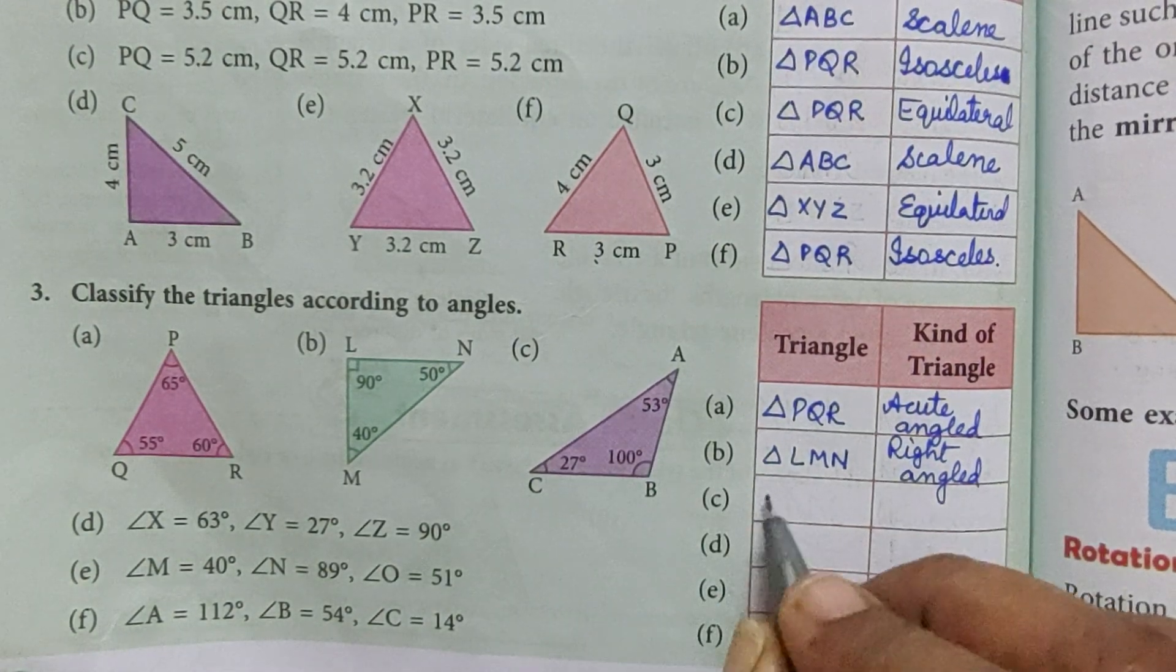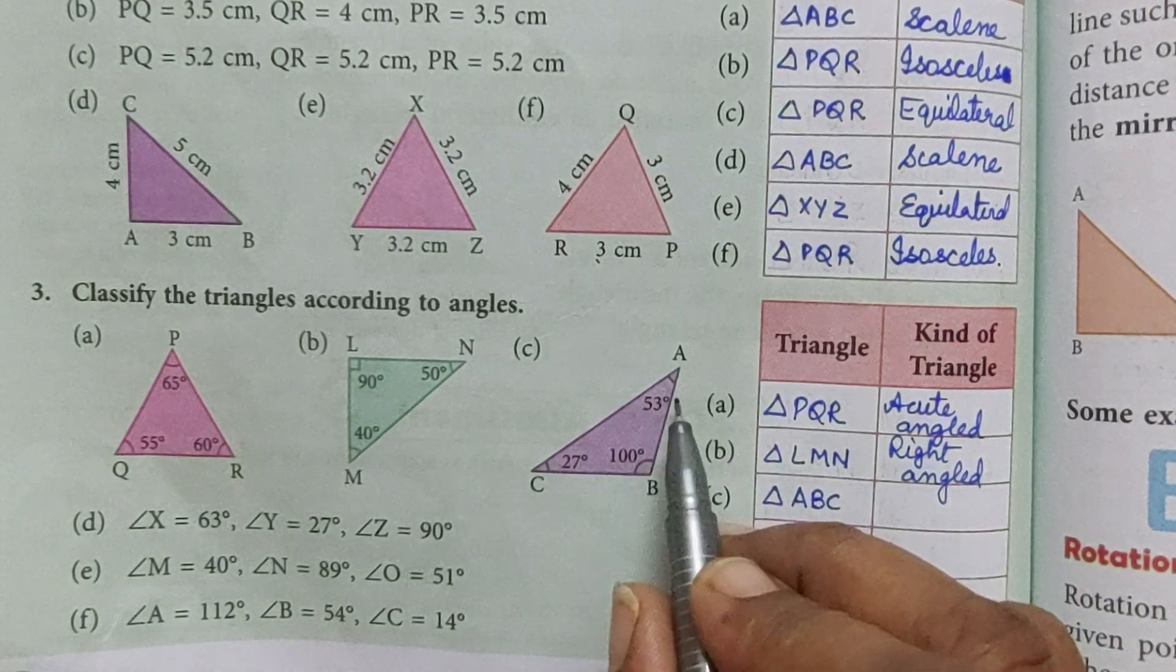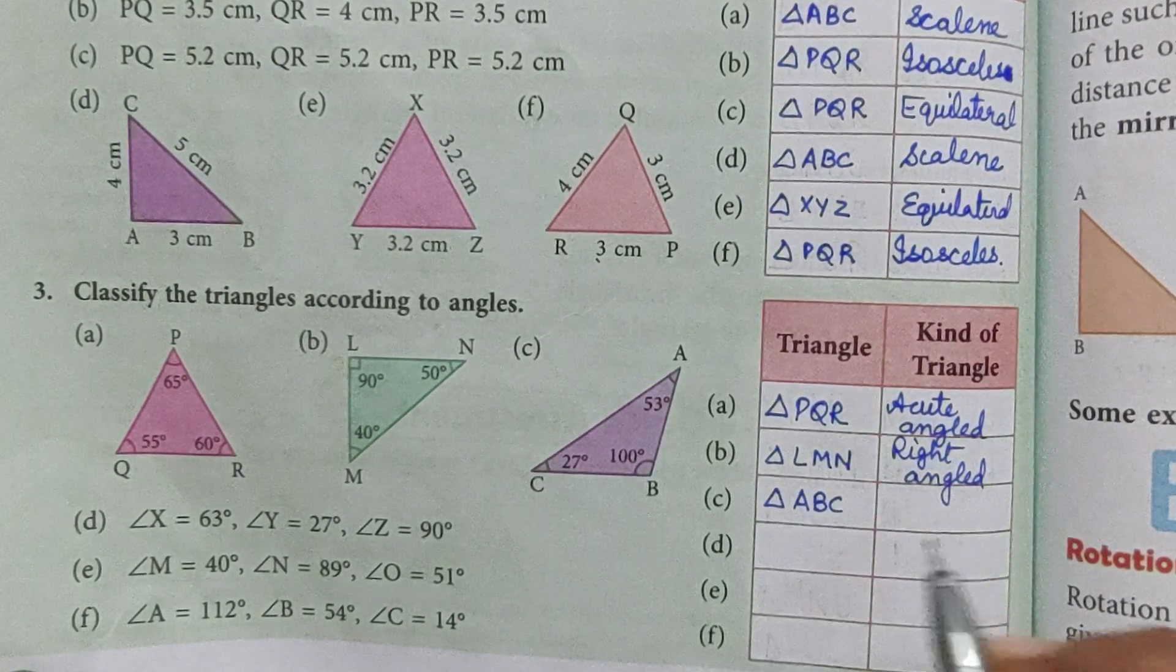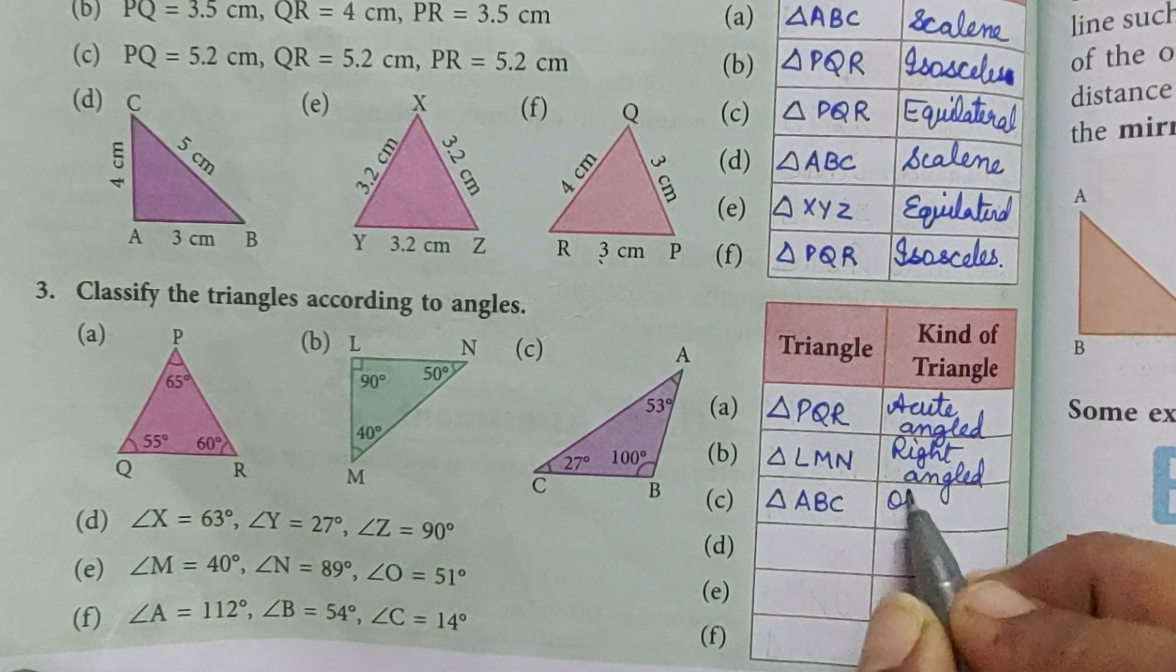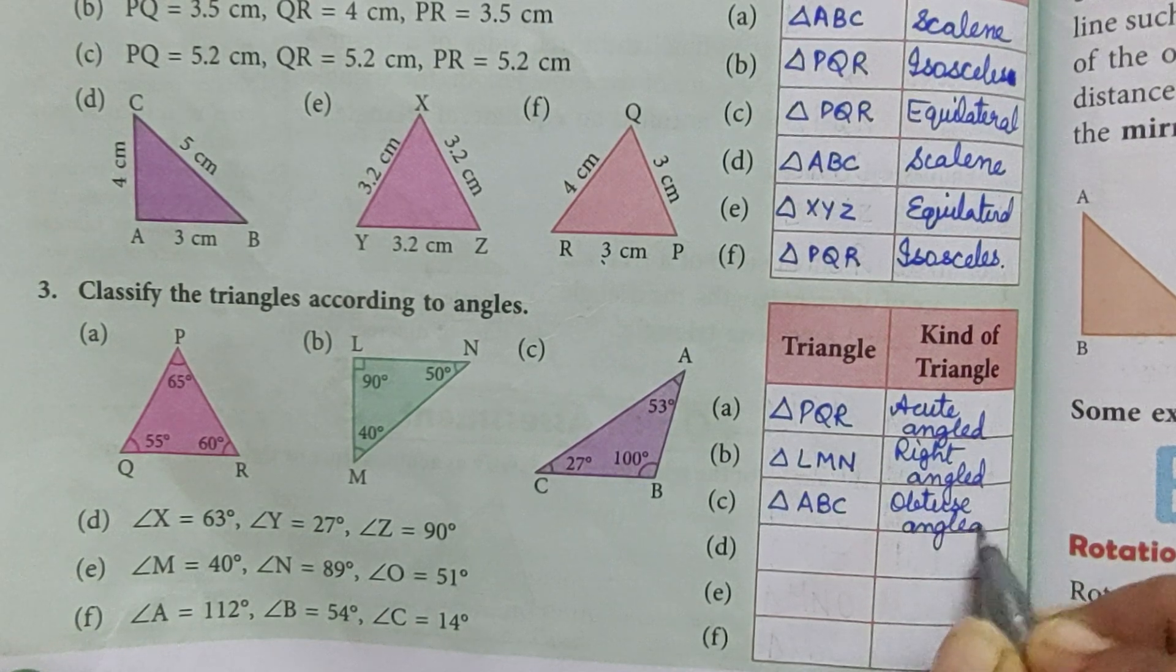Triangle ABC, two triangles are acute and one is obtuse, so it is obtuse angle triangle.